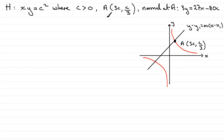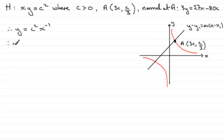We get the gradient of the tangent by differentiating this curve first. You could do implicit differentiation, or you could rearrange it to make Y the subject — that's what I'm going to do. So Y equals C squared over X, or C squared multiplied by X to the power minus 1. Differentiating, dY by dX equals minus C squared X to the power minus 2, which I can rewrite as minus C squared over X squared.